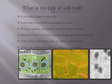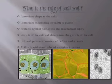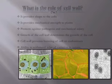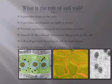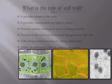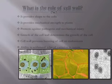The cell wall also regulates the growth of the cell. It also saves the cell from bursting during endosmosis. When the osmotic concentration increases from the outer environment, endosmosis occurs and the cell wall saves our cell from bursting.